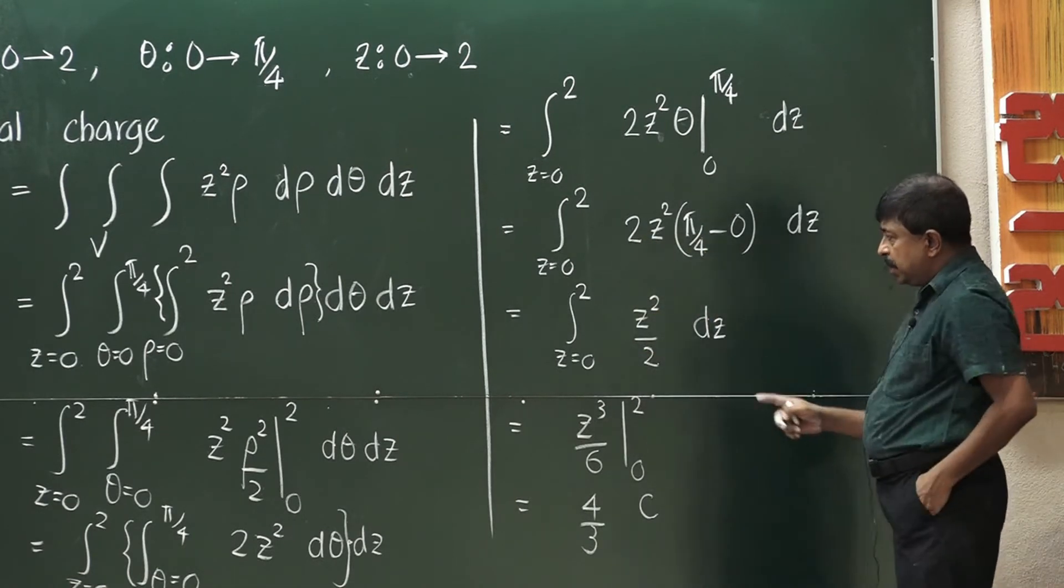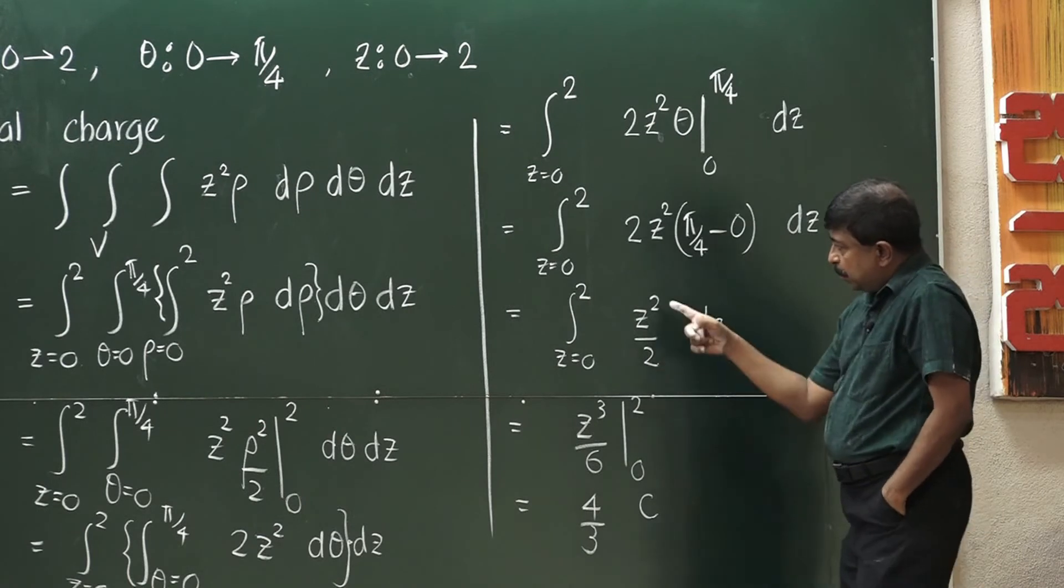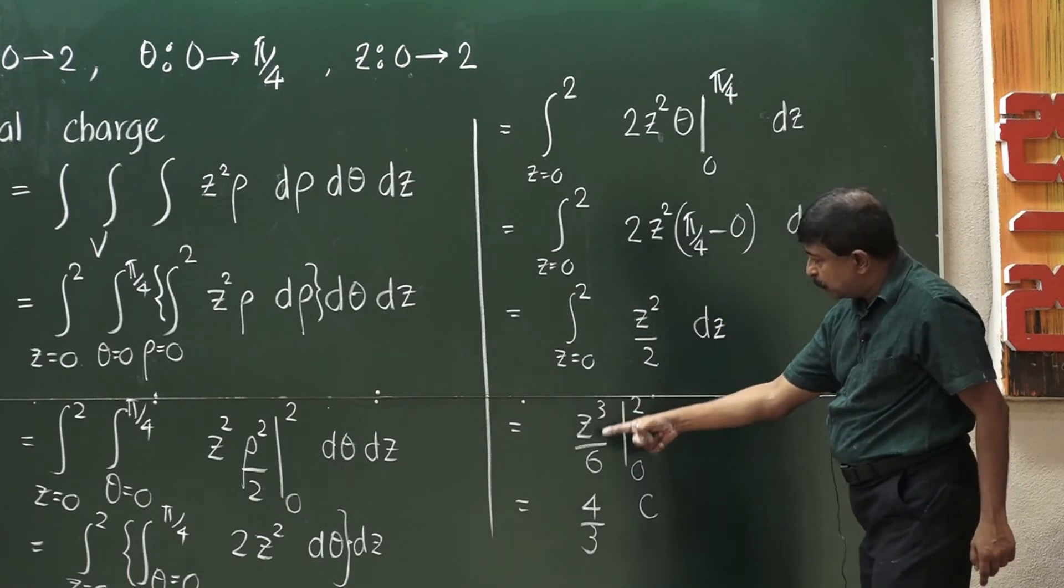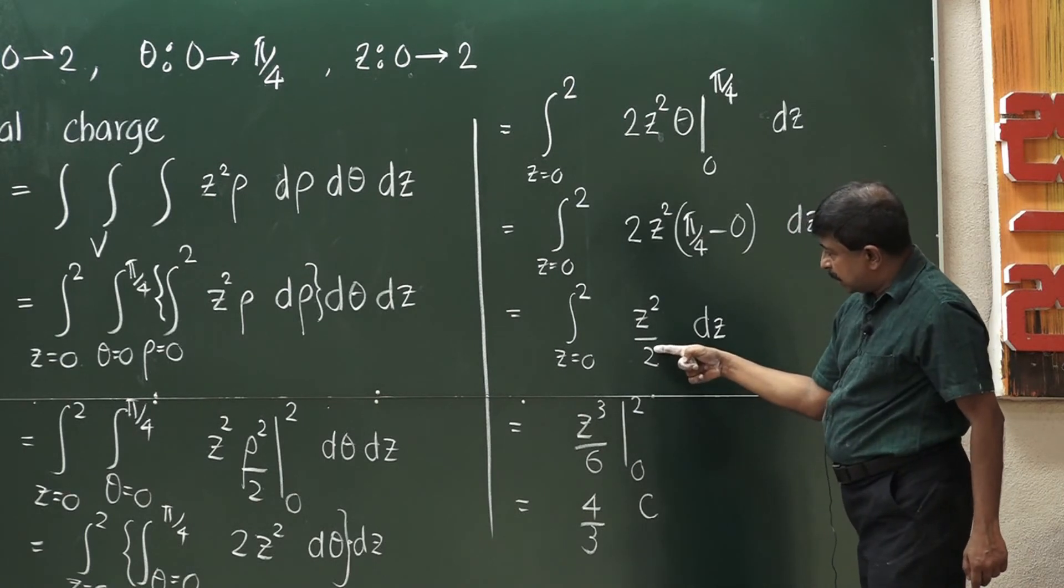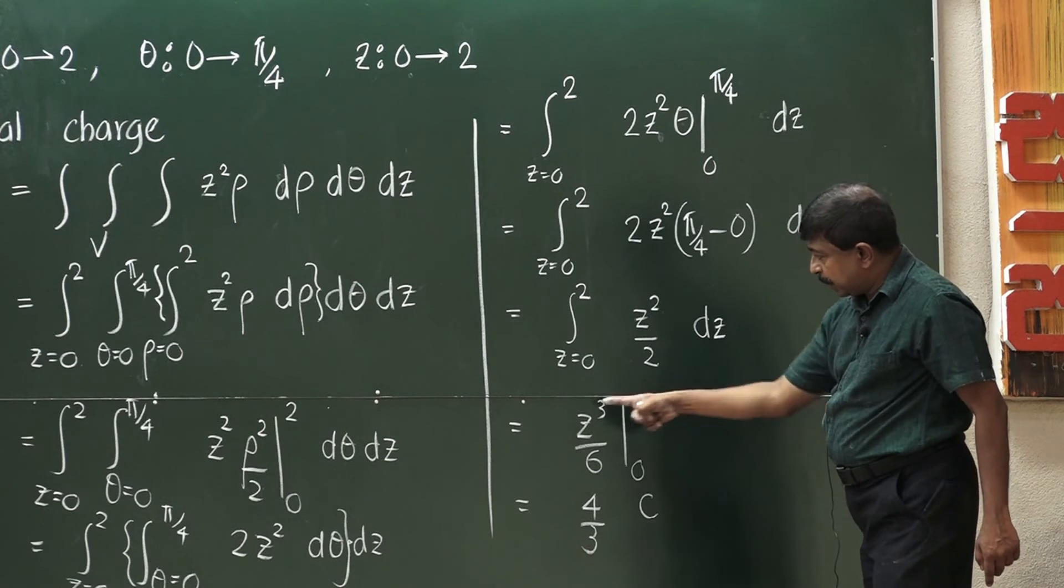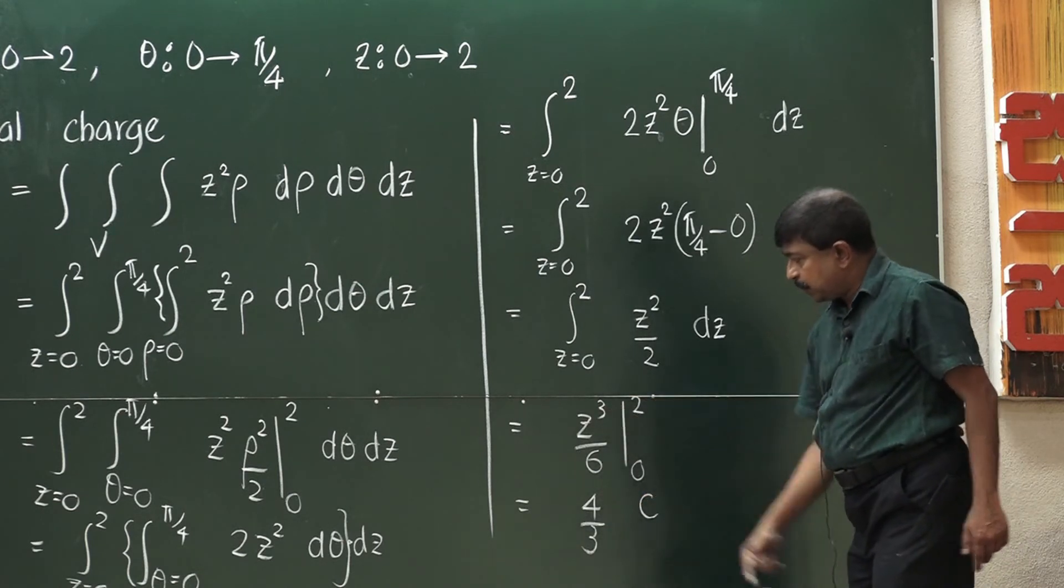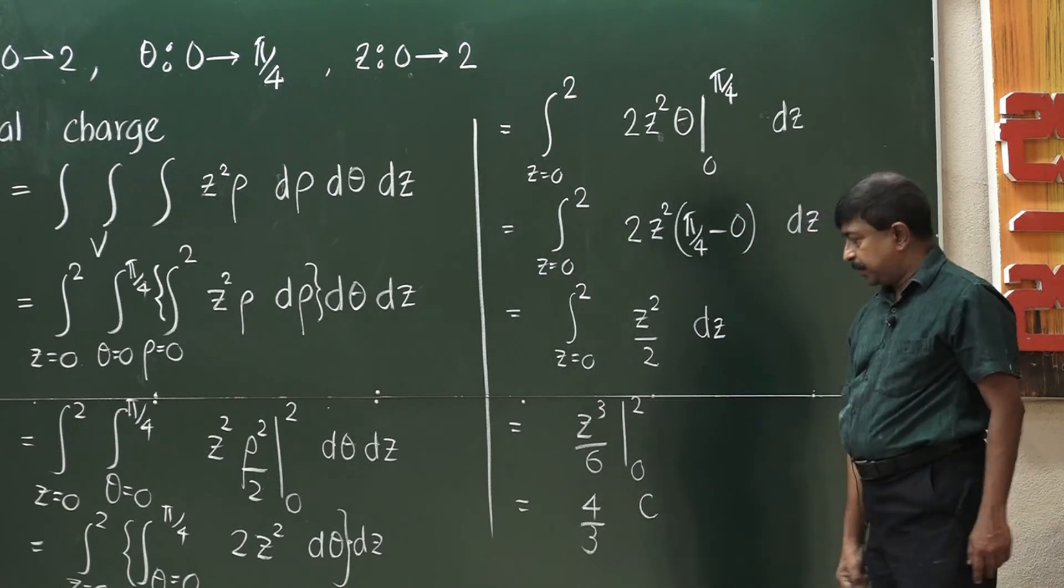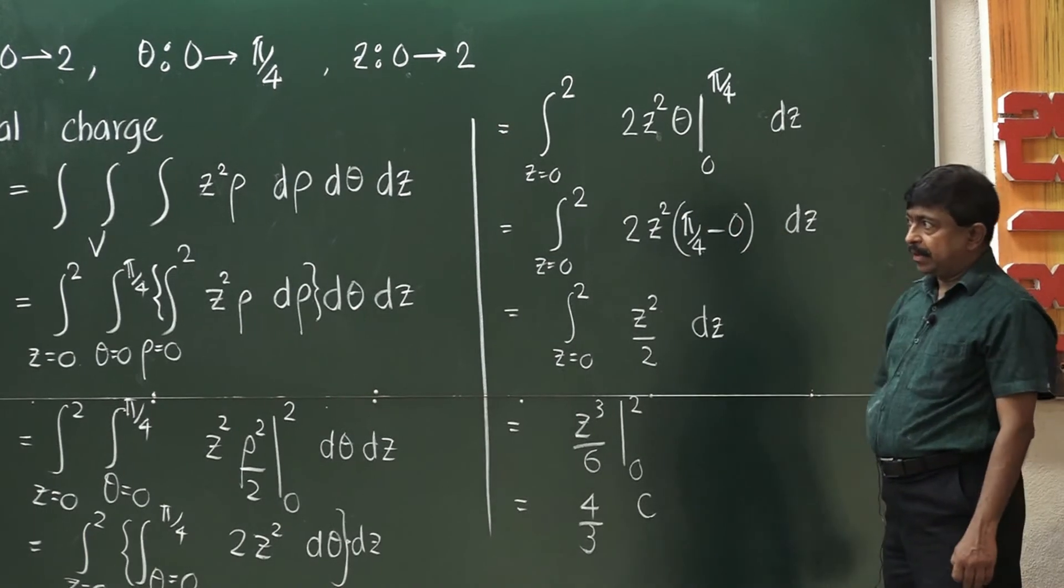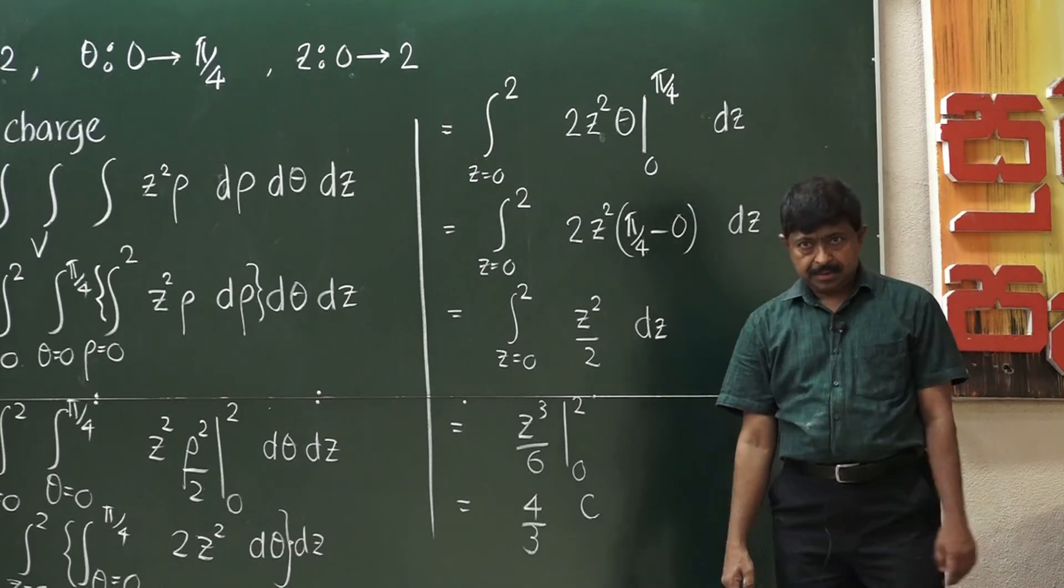This is simple integral. Variable is z. When you have z squared, you can write it as z cube over 3. So, that 3 will combine with these two and you get 6. Plug in limits. You get 8 over 6 which is 4 over 3 coulombs. That is the total charge in that object. Thank you.